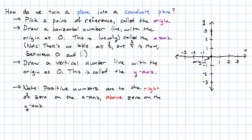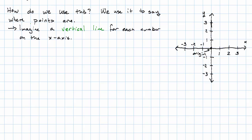Positive numbers are to the right of zero on the x-axis and above zero on the y-axis. We use this coordinate plane to describe where points are. We imagine a vertical line for each number marked on the x-axis. For example, this vertical line corresponds to the number two, and this vertical line corresponds to the number negative three. We also have vertical lines for numbers not actually marked on the x-axis — if I take my unit from zero to one, split it into four equal pieces, and take three of them, this vertical line corresponds to the number three-fourths.